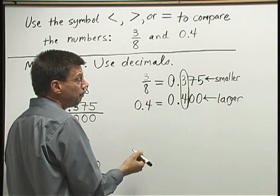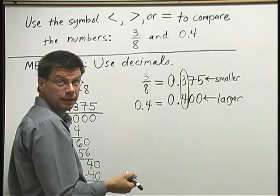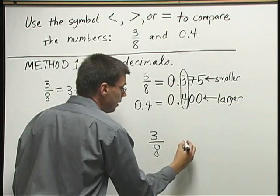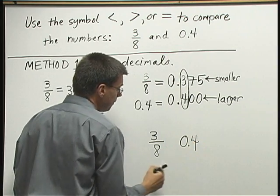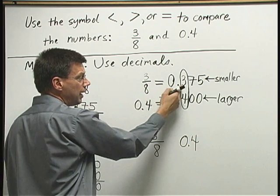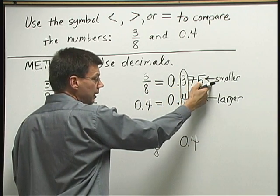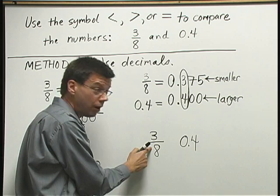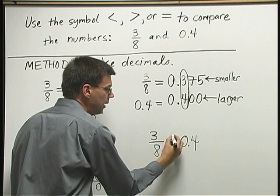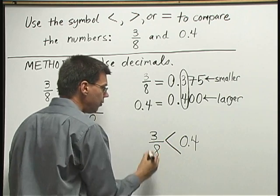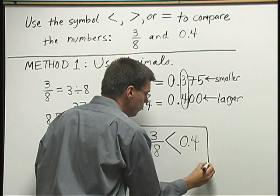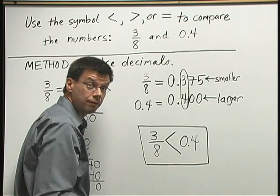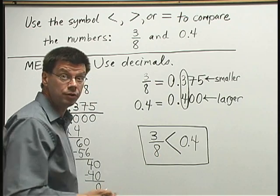Now let's go ahead and compare our numbers using an inequality symbol. We started out with the 3 eighths written first. I'll write 3 eighths first, and then the 0.4 second. Remember, the decimal for 3 eighths was 0.375. That's smaller. So I want to use the inequality symbol that will indicate that 3 eighths is smaller. I want the point of my inequality symbol next to the 3 eighths. In fact, we can read what we've written here as 3 eighths is less than 0.4. And we've solved our problem using decimals.